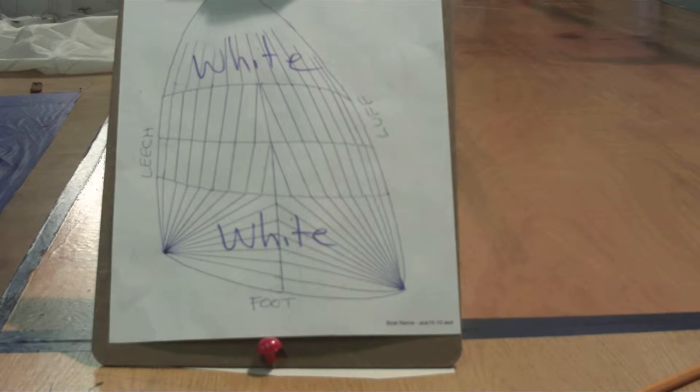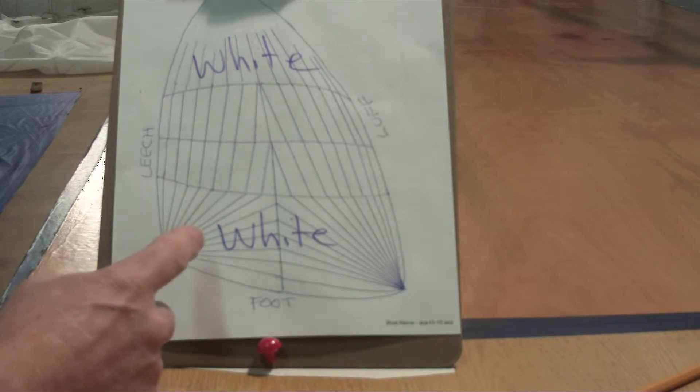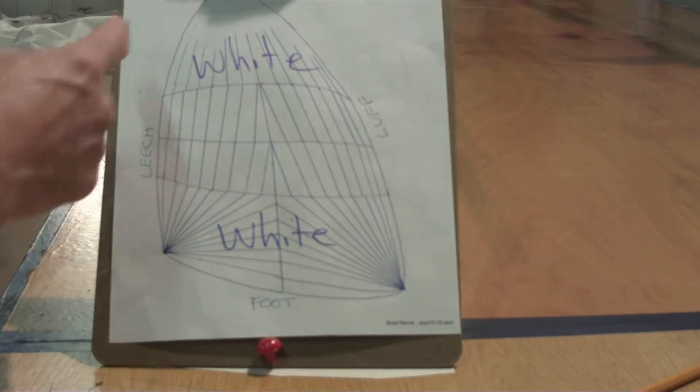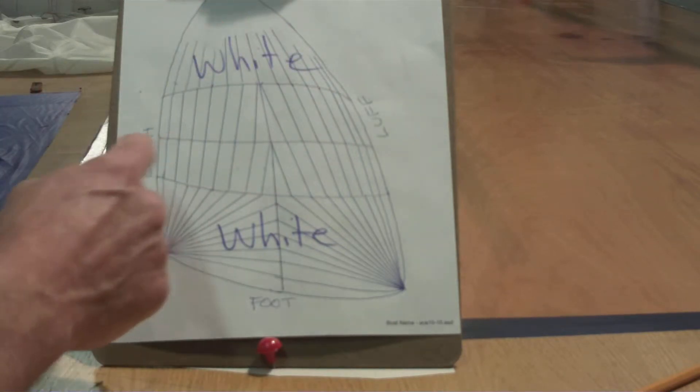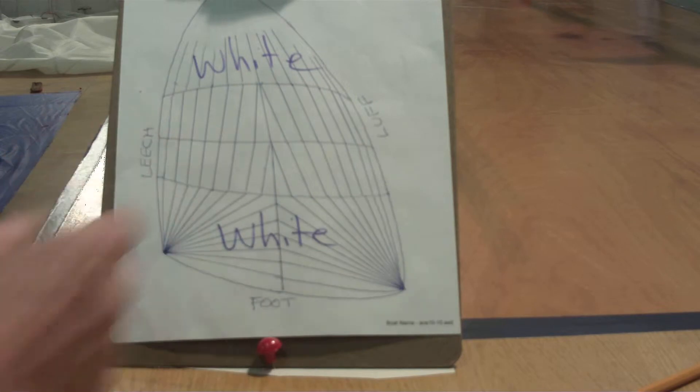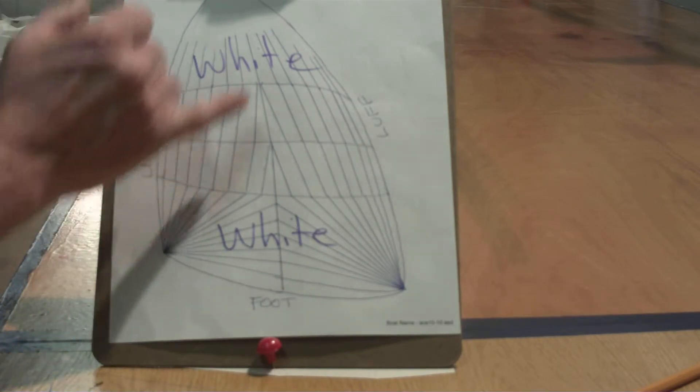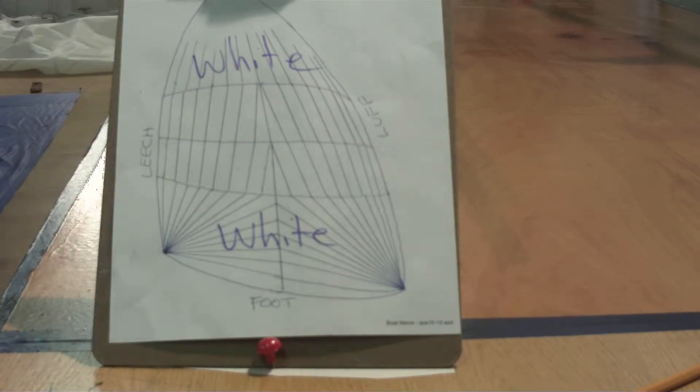We're building a 1.5 ounce asymmetrical cruising spinnaker and here's the panel diagram. The entire clew section and tack section are white 1.5 ounce nylon. The entire head section is 1.5 ounce nylon, as are the two horizontal sections which are made up of vertical panels. One section is red and the other section is blue.